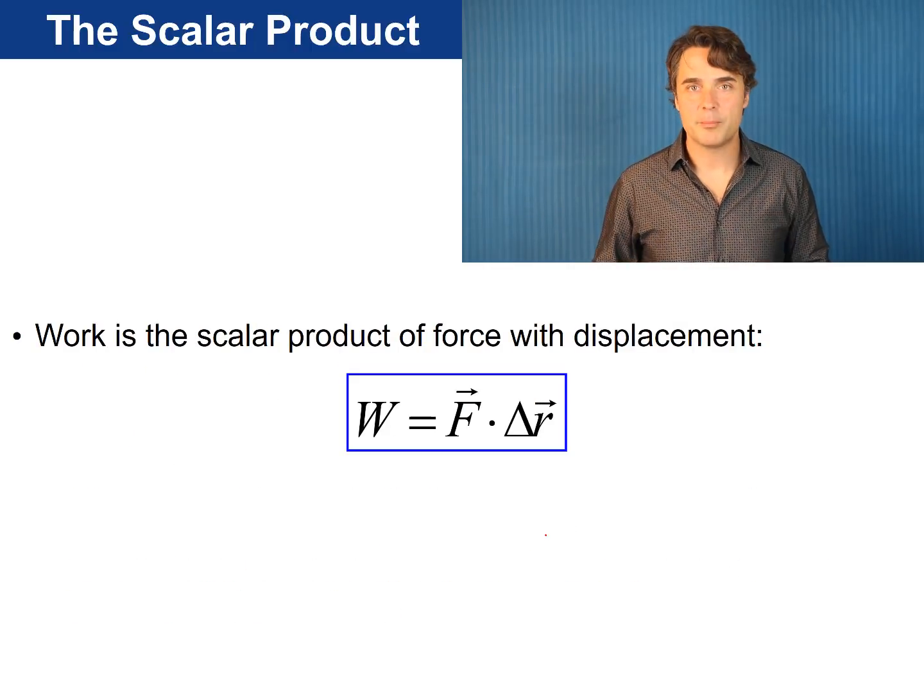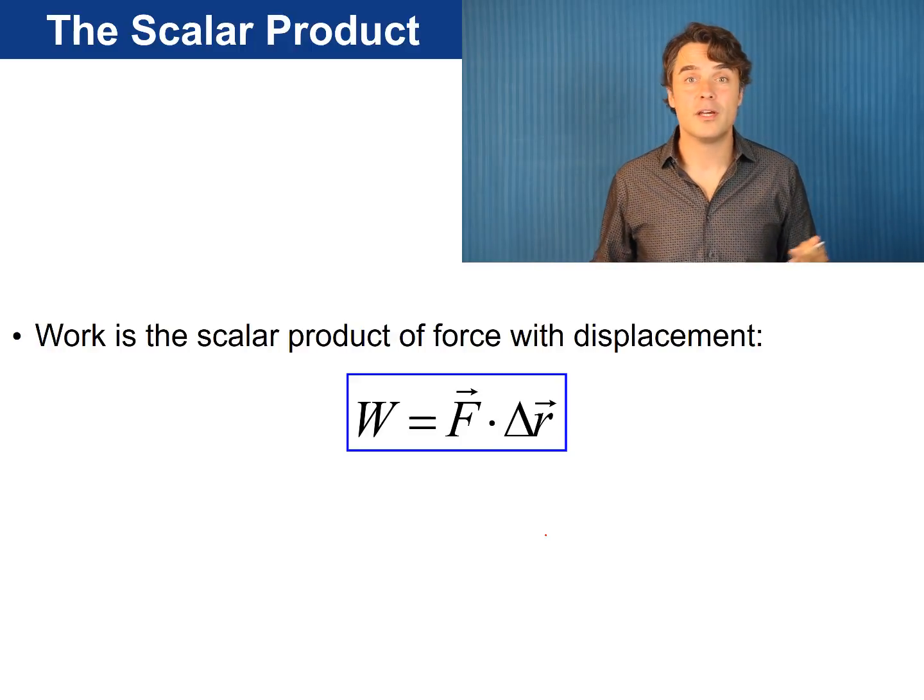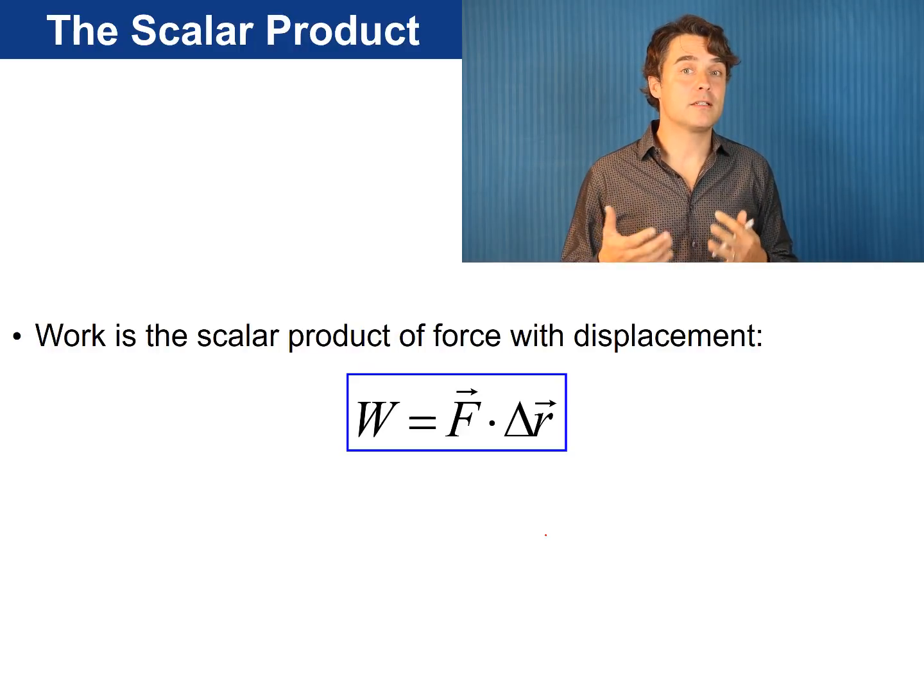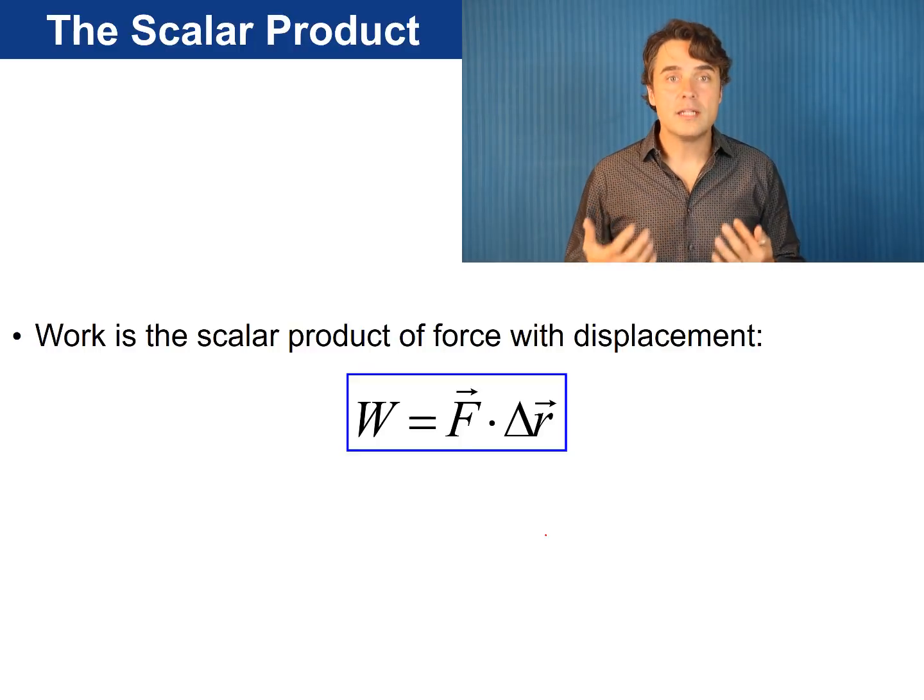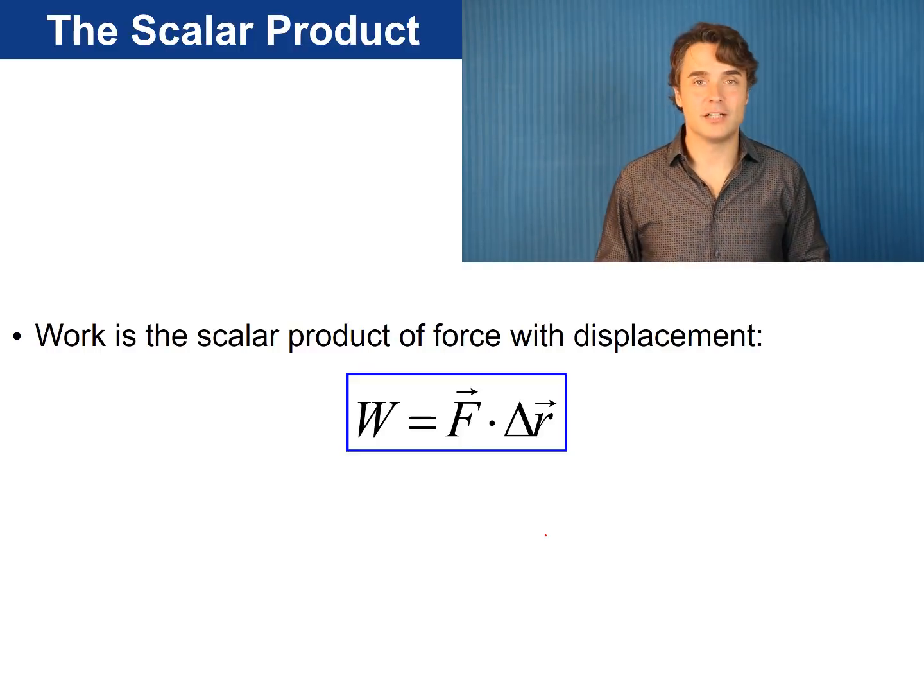So to summarize we have this one very simple looking equation. When a constant force F is applied to an object that moves and the displacement of the object is delta r, the work done by this force on the object is F dot delta r.